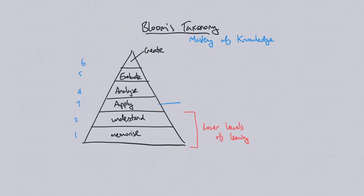Most people say that understanding is true learning — you know something when you understand it. But this is not true. Understanding is actually also very low-level learning, because just because you understand something doesn't mean you're able to do anything with that information. Information you can do nothing with is not very useful. The next step after understanding is applying that knowledge — simply using it to solve problems. This is the first level at which knowledge becomes useful.